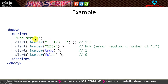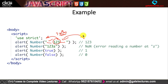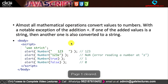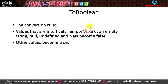In the code example: converting '   123   ' (with spaces) trims the spaces and gives 123. Converting '123z' gives NaN because of the non-numeric 'z'. Converting true gives 1 and false gives 0 as numeric values.